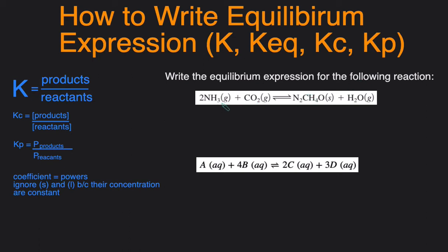For this first reaction, let's start off by taking a look at the states and just crossing any solids and liquids out because we ignore those. So we have a gas, a gas, solid, cross this out, and then a gas. So since all these are gases, we have the option of writing either Kc expressing it in concentration or Kp.